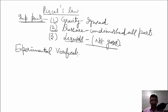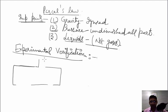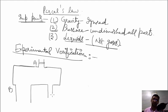Third point: experimental verification of Pascal's Law. We have one opening — the first one is labeled capital A. The second opening has the largest area of cross-section. In three openings, we have massless and frictionless cylinders attached.